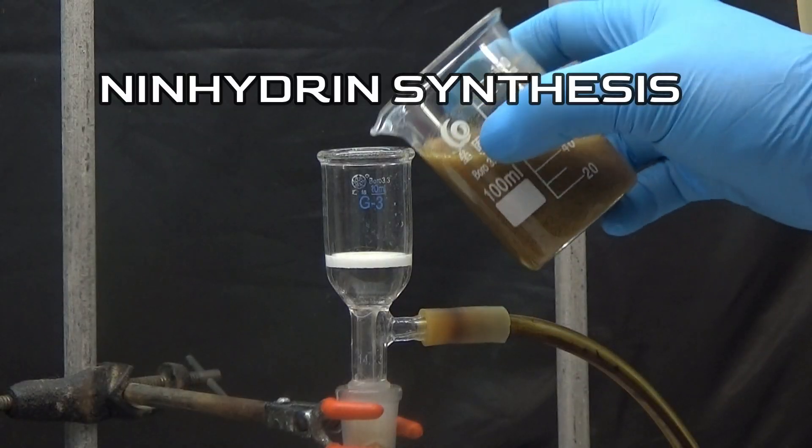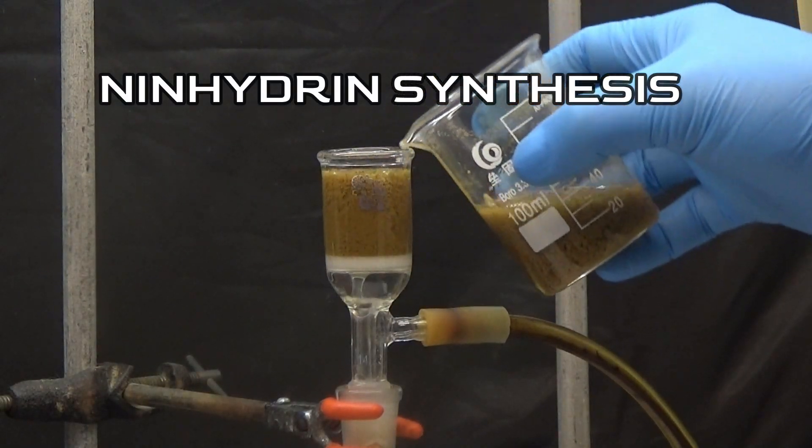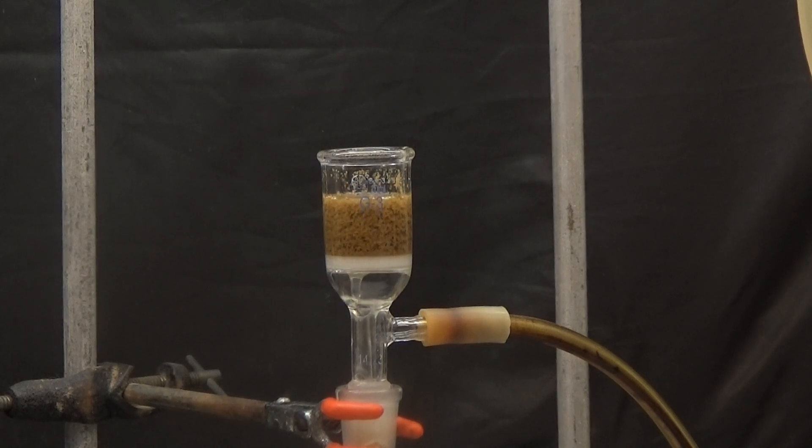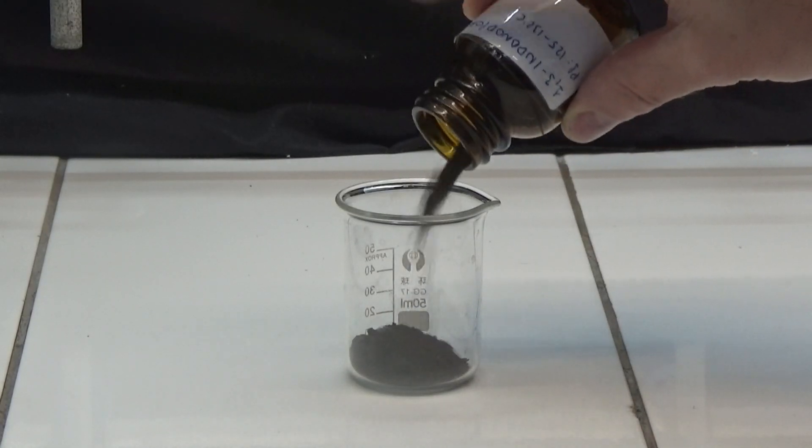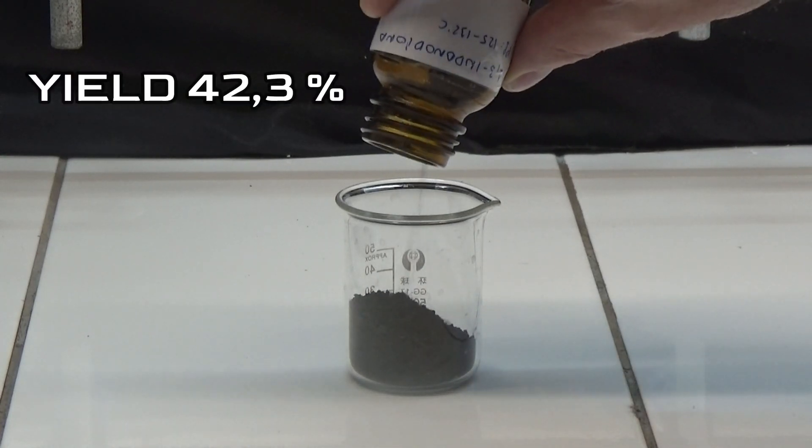But the purity of this product is sufficient for my purpose in the following video, the synthesis of ninhydrin. The weight of the product obtained was 16.5 grams. The yield obtained from diethyl phthalate was 42.3%.